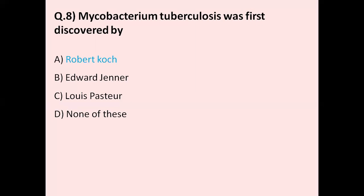Question number eight: Mycobacterium tuberculosis was first discovered by which scientist? Option A Robert Koch, option B Edward Jenner, option C Louis Pasteur, option D none of these. The correct answer is Robert Koch.